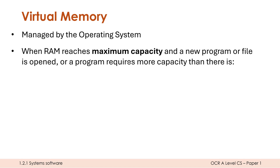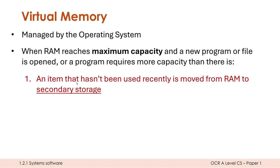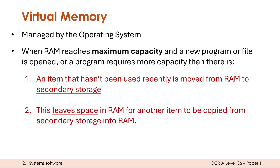What happens with virtual memory? Well, first of all, an item that hasn't been used recently is moved from RAM to secondary storage. The OS picks something in RAM to move to secondary storage. I've used the word 'item' — quite a vague word — because it will either be a page or a segment. This frees up a gap in RAM for another item, either a new program or file, or just an extension of capacity. We use secondary storage effectively as an overflow.